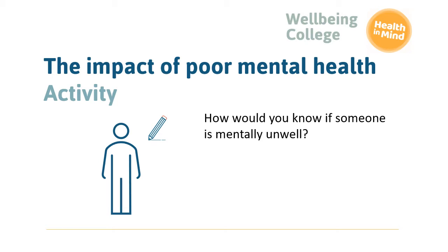We've thought about what affects our mental health. Now we're going to understand a bit more about poor mental health and how it can impact people. Let's consider how you would know if someone is mentally unwell. For this activity, I invite you to take a piece of paper and draw a simple outline of someone on a page — a bit like this one. Add words, phrases or images next to the person to illustrate all the ways in which poor mental health might affect someone.